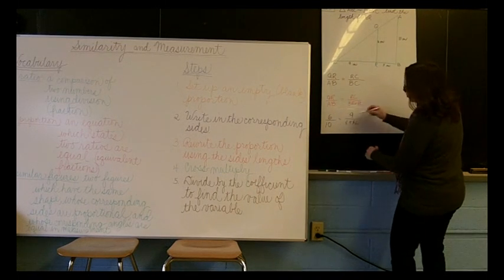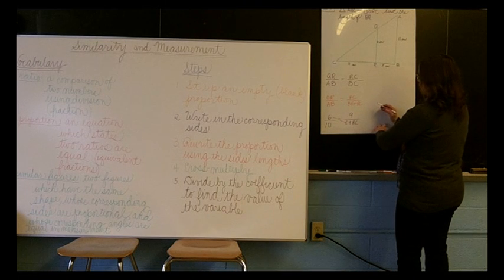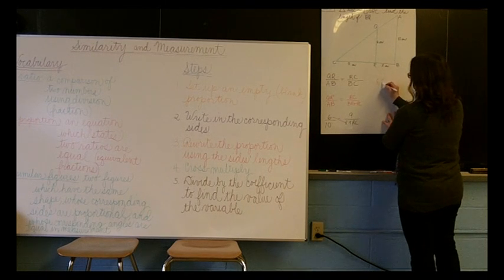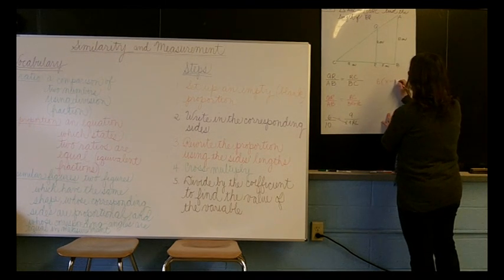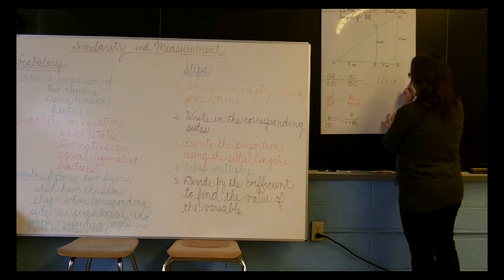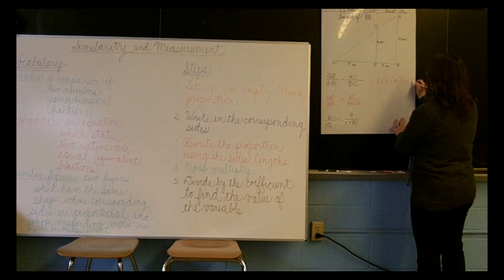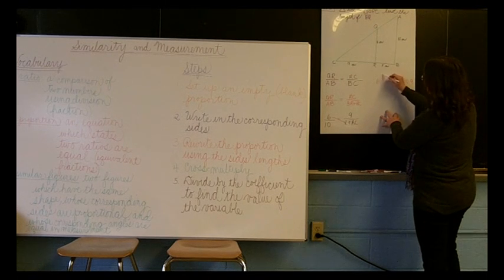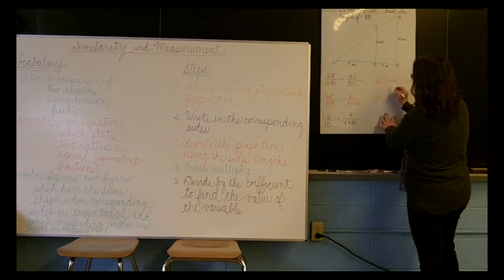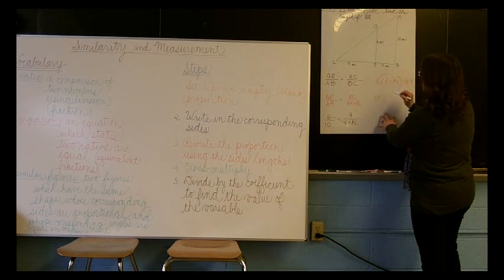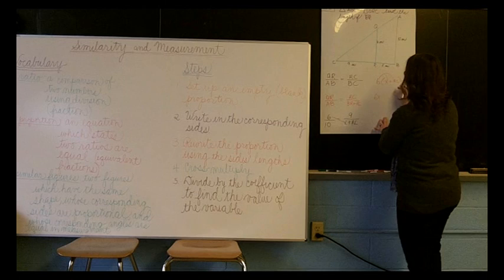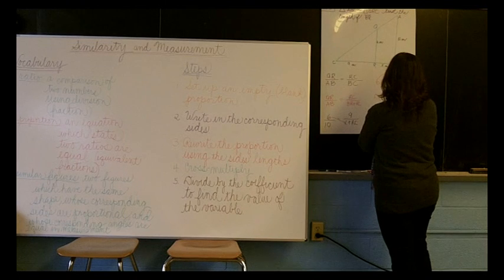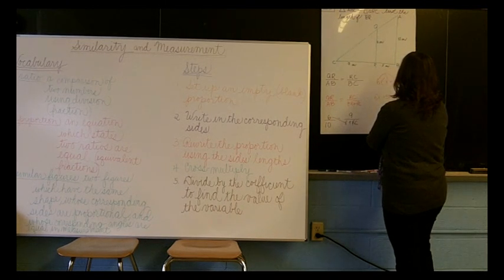But our steps don't change. Now we cross multiply. So we have 6 times—now since this is two different terms, I'm going to put that in parentheses—X plus RC, and that equals 10 times 9. So here what we do now is we get to practice using the distributive property. 6 times X is 6X. 6 times 9 is 54. And that equals 90.